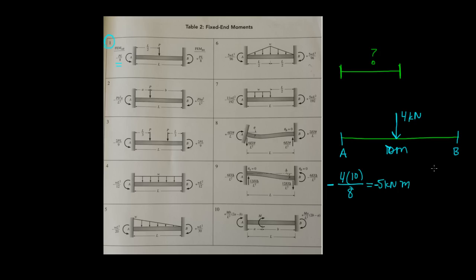And on the right side of the beam, it's PL over 8, but it's positive this time. So it's positive 4 times length 10 over 8, and that should be 5 kilonewton meters. 40 divided by 8 gives us 5, 40 kilonewton meters.